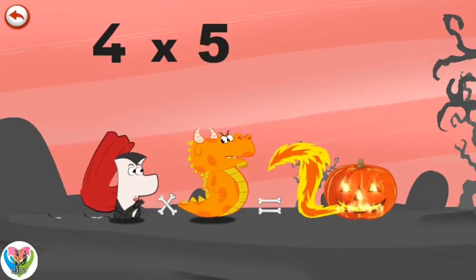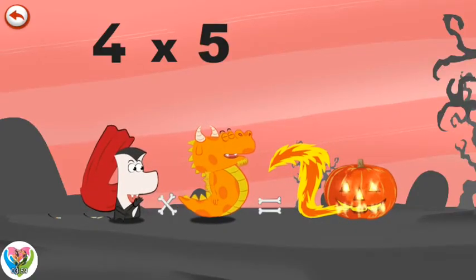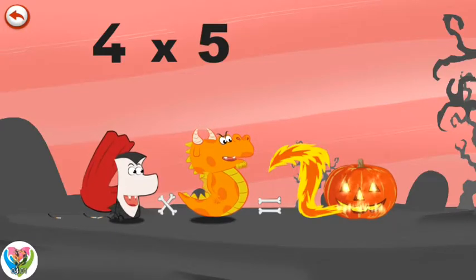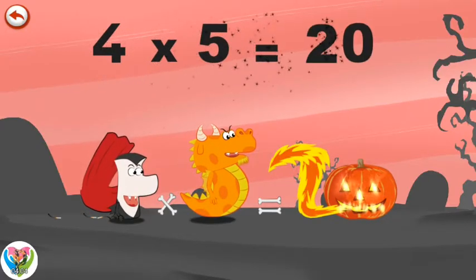At last, Mr Vamp 4's pumpkin, which is in the shape of a zero, is finally alight. Four times five is twenty.